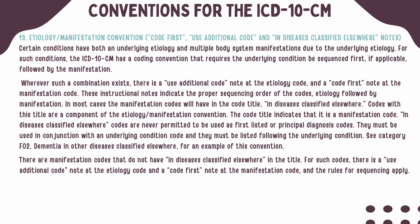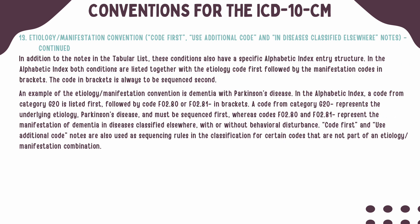Sometimes the manifestation code will include 'in diseases classified elsewhere,' which will indicate that a manifestation code is needed. These codes should never be assigned as a first-listed code, and they must be used in conjunction with an etiology or an underlying condition code. When etiology and manifestation codes are found in the alphabetic index, they are listed together with the etiology code first, followed by the manifestation code in brackets. It is very important to remember that they should always be coded in this sequence.